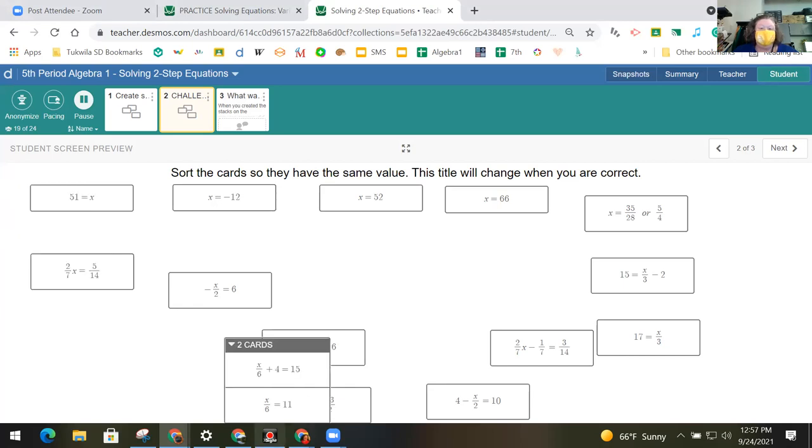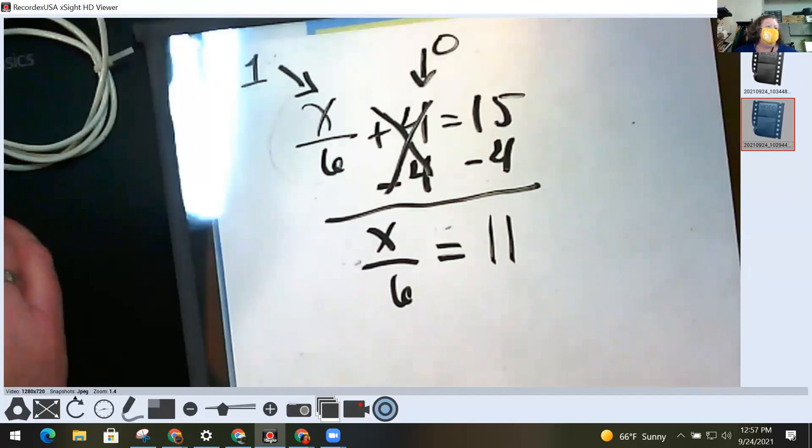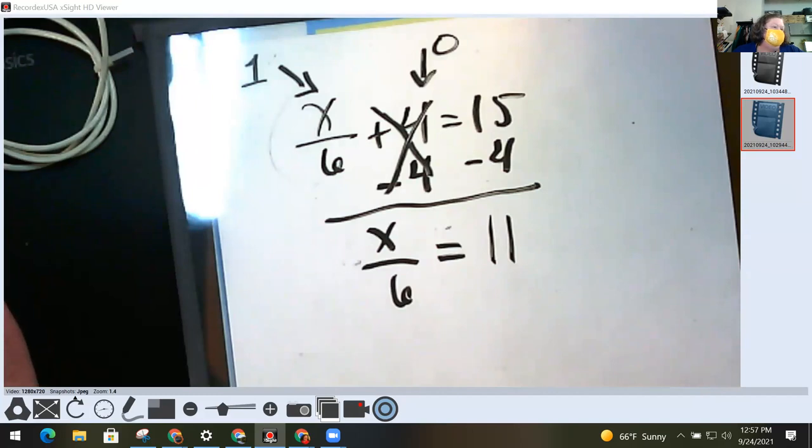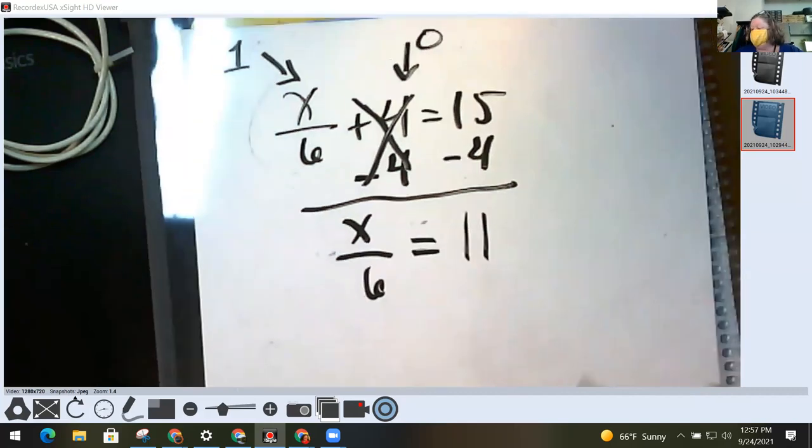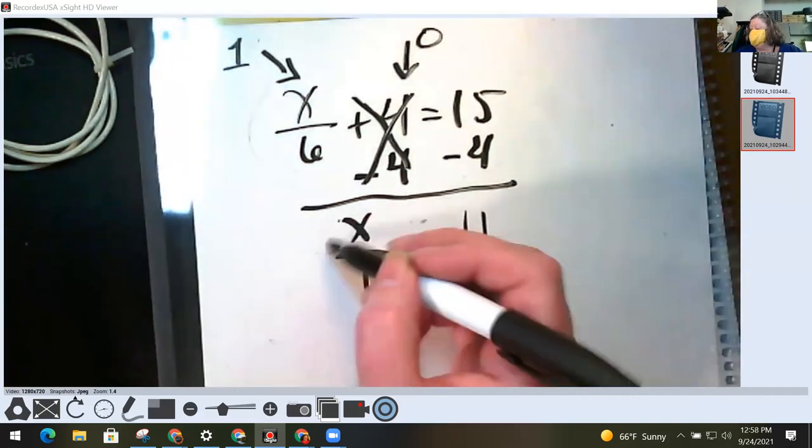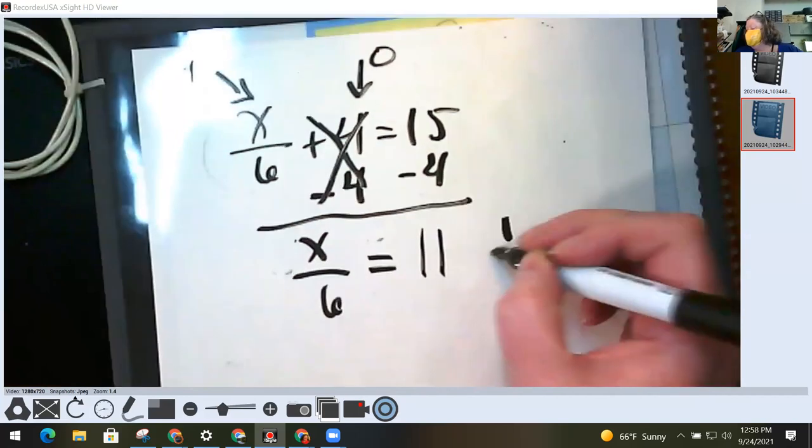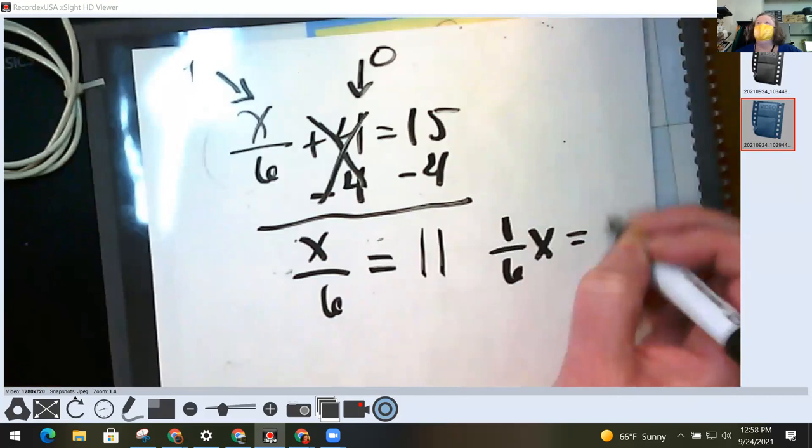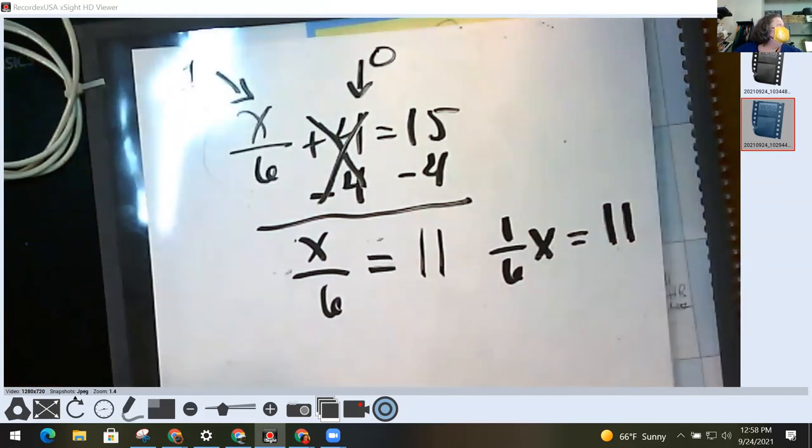What I don't know is what they're equal to, but I know that these two cards go together. We have now gotten to the place where we've got this fraction is equal to a number. And I want to show you something about that fraction that I think is not always clear. Frances, you can see the dry erase now? Yes. Great. Thank you. I could rewrite this x over six as one-sixth times x equals eleven.